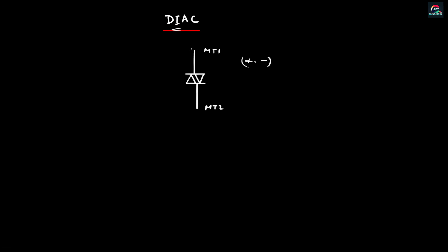What we're doing is we have two terminals. We have three different kinds of types. We have three different semiconductor types. This terminal will be positive or negative, and we will have two terminals and three different semiconductor devices.